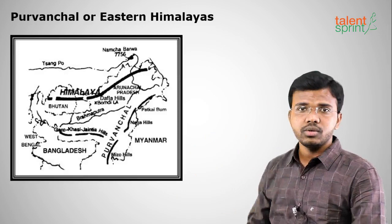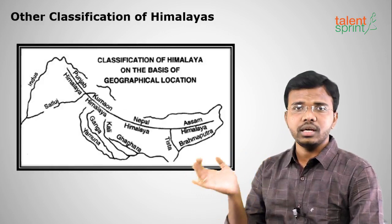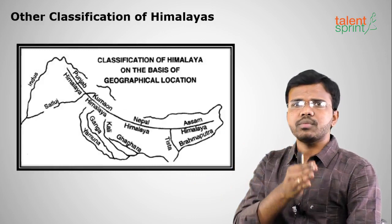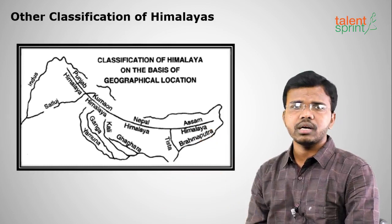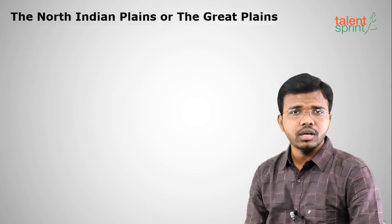Another classification of the Himalayas is based on the rivers between them. This includes: the Jammu & Kashmir Himalayas (Punjab Himalayas), Kumaon Himalayas, Nepal Himalayas, and Assam Himalayas.